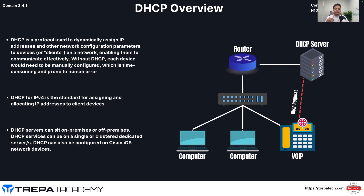So DHCP — Dynamic Host Configuration Protocol — is used to dynamically assign IP addresses and other network configuration parameters to devices, or what we call clients. Think phones, computers, maybe printers. Imagine a mid-sized enterprise of 300 people across different VLANs and subnets where we had to manually assign every IP address, subnet mask, default gateway, and DNS server to every single computer, then manage it to avoid IP address conflicts. That just wouldn't be feasible, and it hasn't been since probably the mid-to-late 1990s.